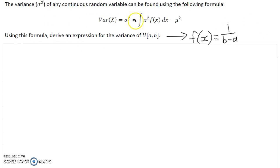So using this formula, which works for any continuous random variable, we have the variance of the uniform distribution is given by an integral of x squared multiplied by the probability density function. So that's x squared multiplied by 1 over b minus a, integrate with respect to x, but then we're going to take off the mean squared.